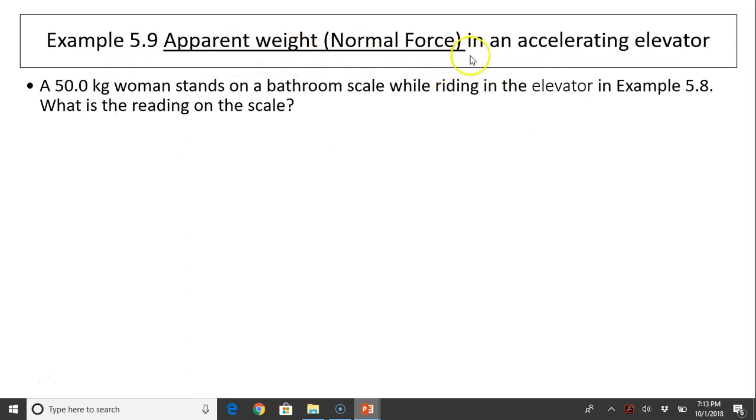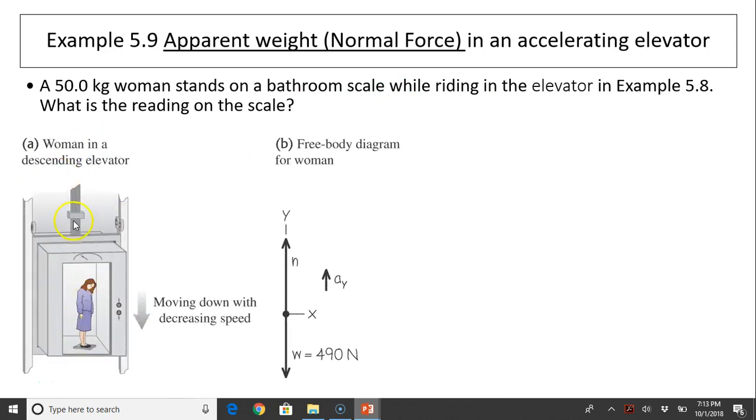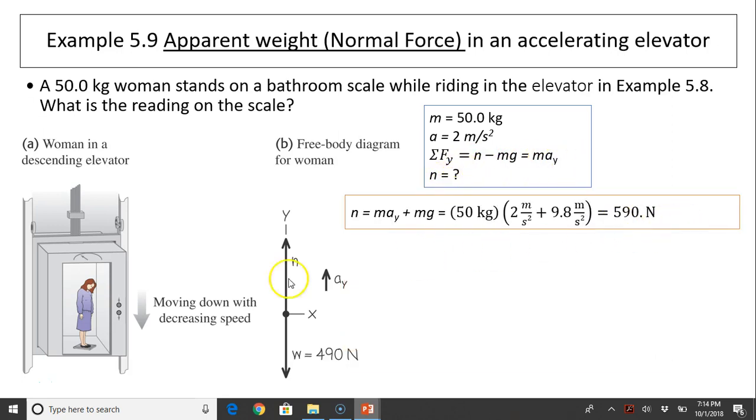Example 5.9, apparent weight, normal force in an accelerating elevator. A 50-kilogram woman stands on a bathroom scale while riding the elevator in the last example. What is the reading on the scale? Here is the sketch of the diagram and the free body diagram. On the woman, there are two forces, normal force and gravity. There's no horizontal force. Upward is positive. In this case, we know mass is 50 kilograms. We know the woman is accelerating with the elevator, so her acceleration is positive upward, 2 meters per second squared. Sum of the force should be N minus Mg, and that should give you mAy. What is N? N should be 590 newtons.